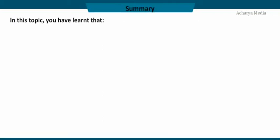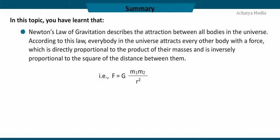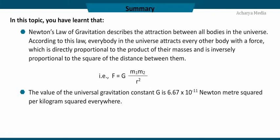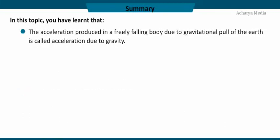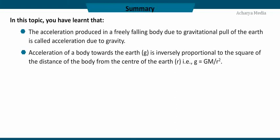In this topic you have learned that Newton's law of gravitation describes the attraction between all bodies in the universe. According to this law, every body in the universe attracts every other body with a force directly proportional to the product of their masses and inversely proportional to the square of the distance between them: F equals G·m1·m2 divided by r squared. The value of G is 6.67 × 10⁻¹¹ Newton·meter squared per kilogram squared everywhere. Acceleration due to gravity g equals G·M divided by r squared, and is inversely proportional to the square of the distance r from the center of the earth.